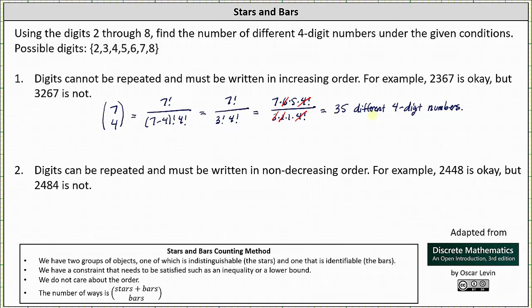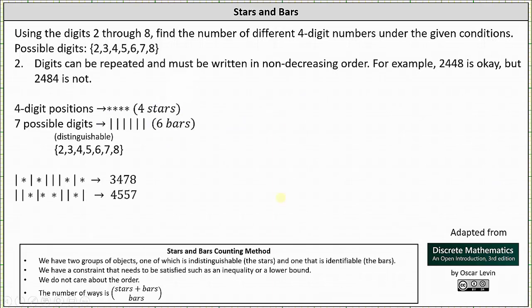For number two, the digits can be repeated and must be written in non-decreasing order. For example, two, four, four, eight is okay, but two, four, eight, four is not. To answer this question, we will use the method of stars and bars. Because we're forming four-digit numbers, we have four digit positions, indicating we have four stars. And because there are seven possible distinguishable digits, we have six bars.